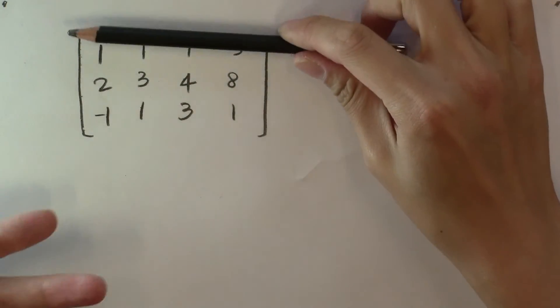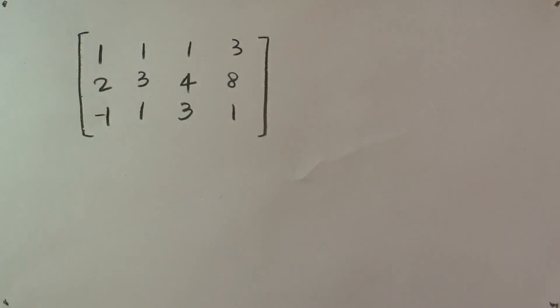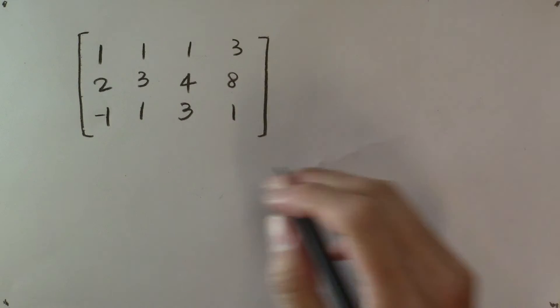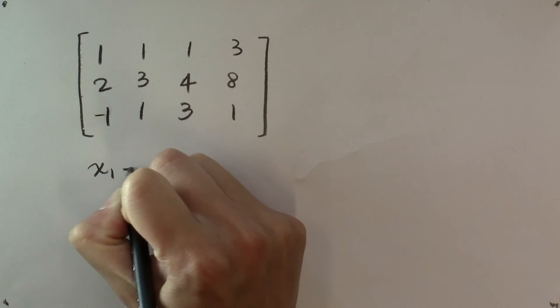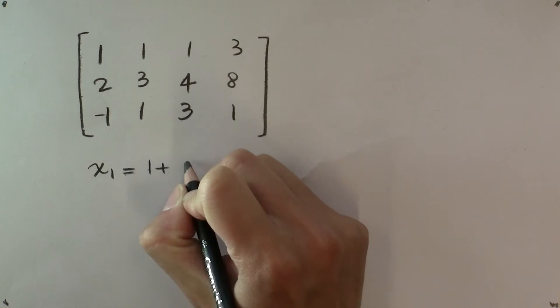And you use row reductions to reduce it to echelon form. Once you've done that, you'll find that the solution is x₁ can be expressed in terms of x₃.